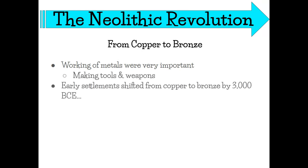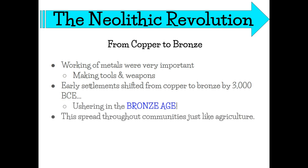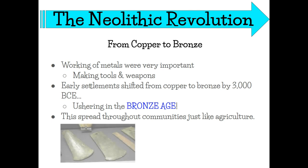Early settlements started to shift from copper to bronze by about 3,000 BCE. This ushered in the Bronze Age, and the knowledge spread throughout communities just as agriculture had — moving from community to community as people realized bronze was a stronger, better metal that worked better for their needs.